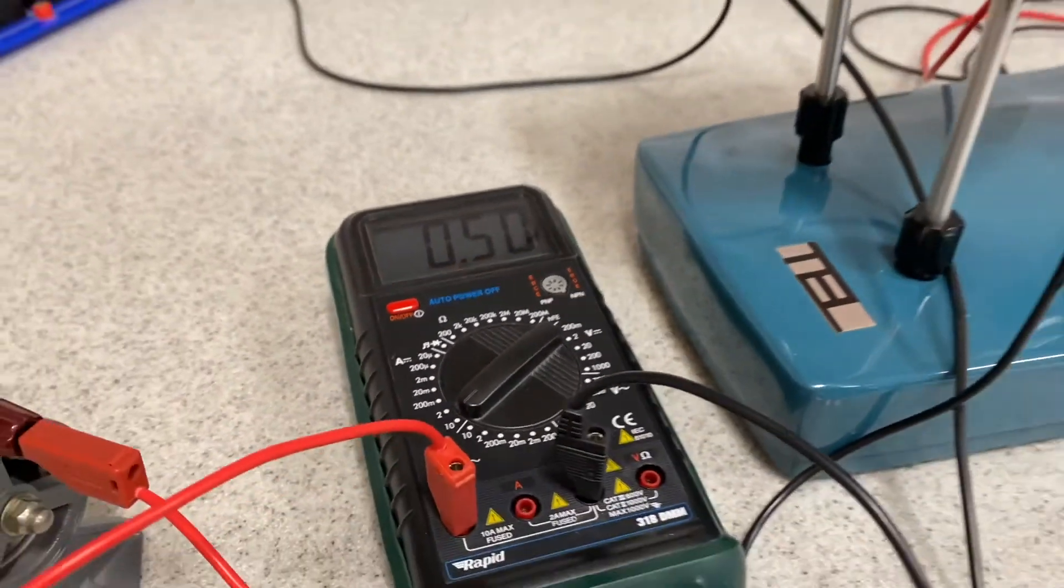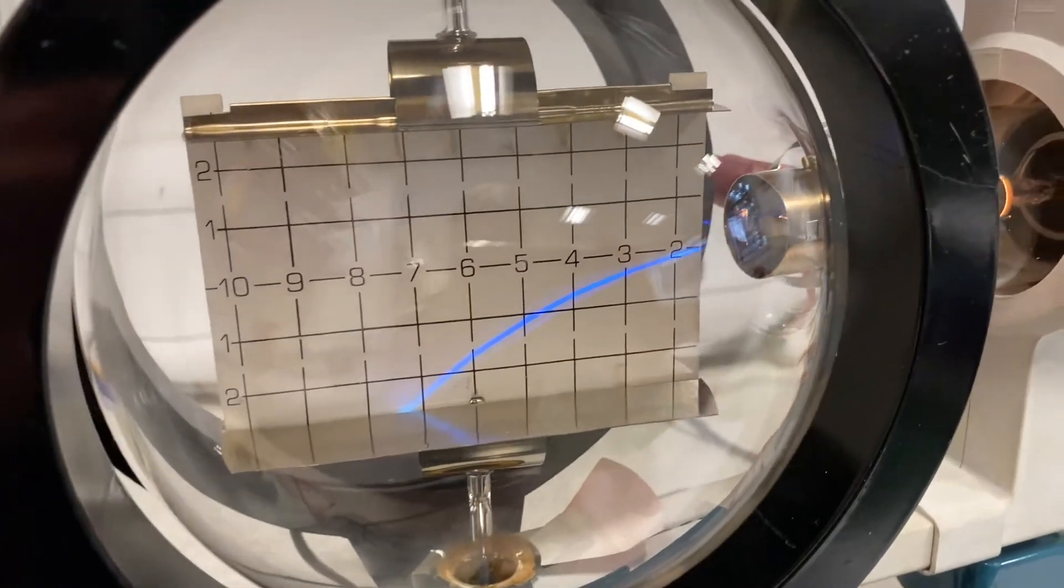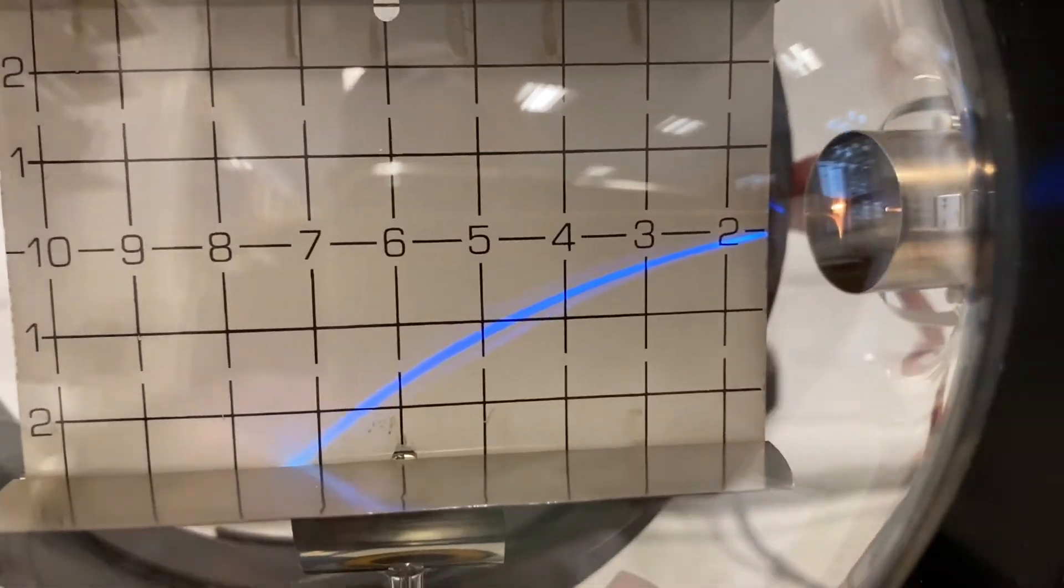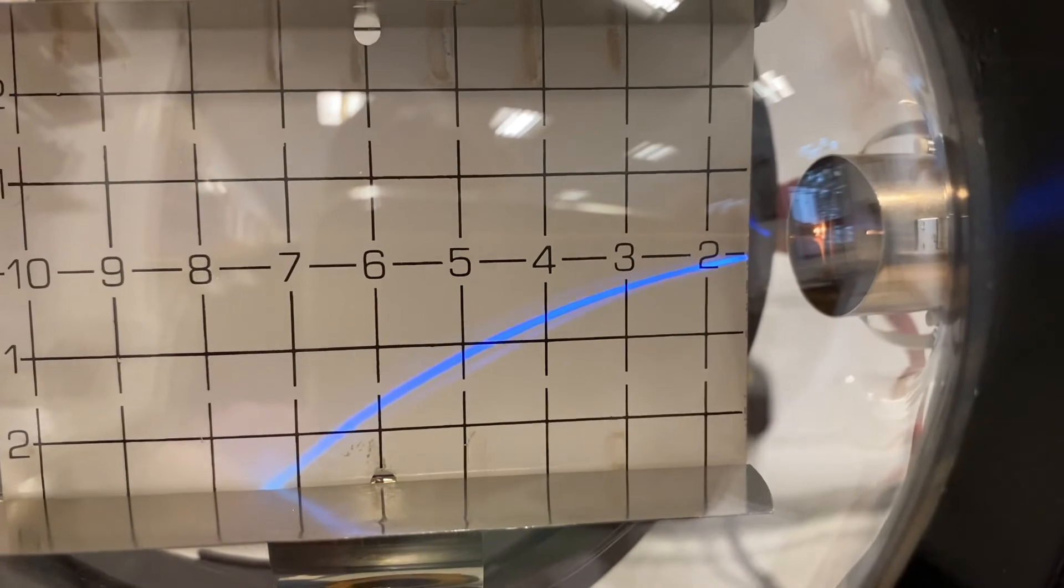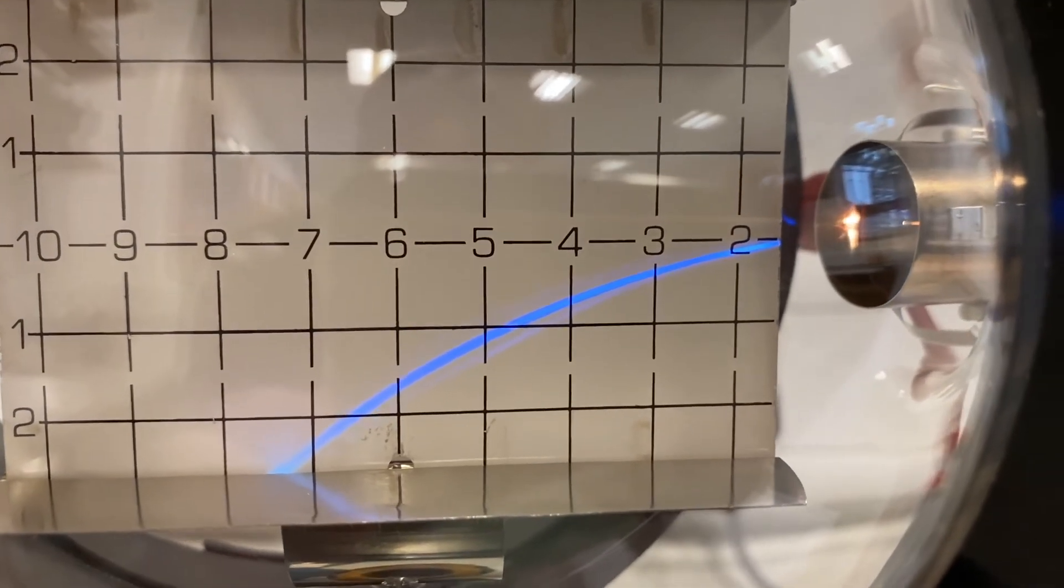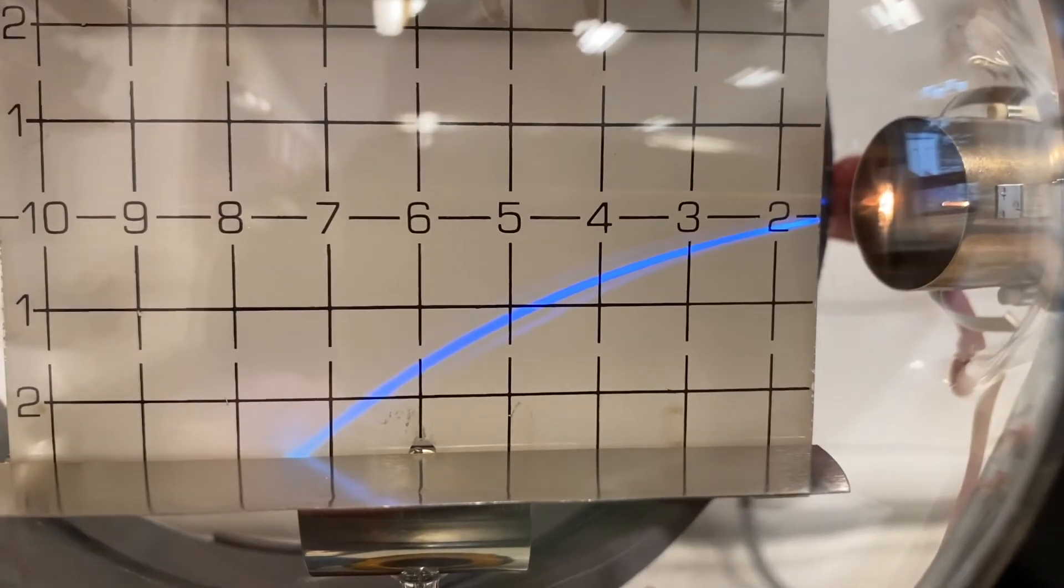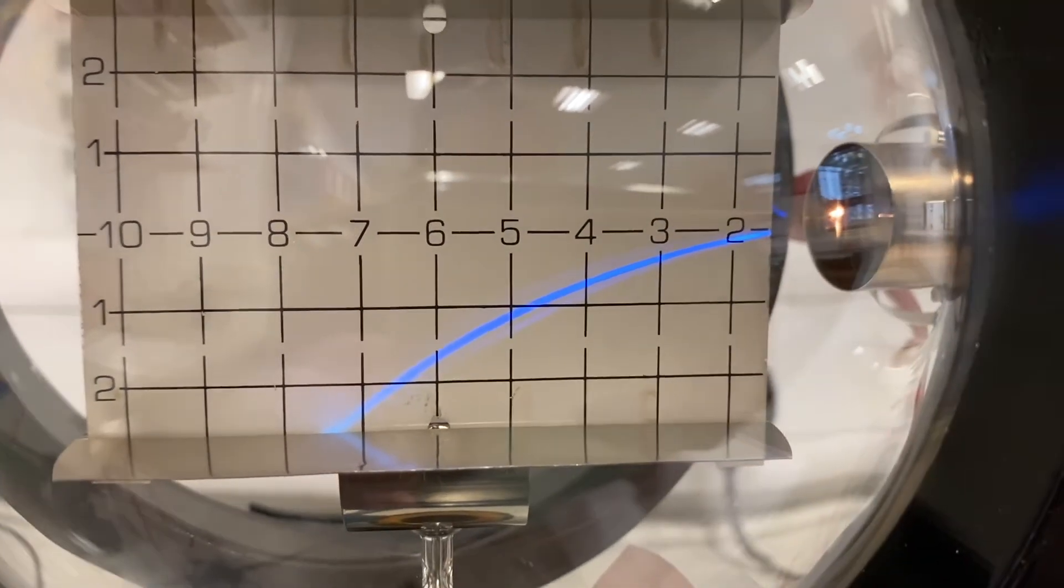I've moved it up to 0.5 amps, 0.5 amps. We're going forward. This time I'm going to use x coordinate 5, y coordinate 1.2. 5, 1.2.